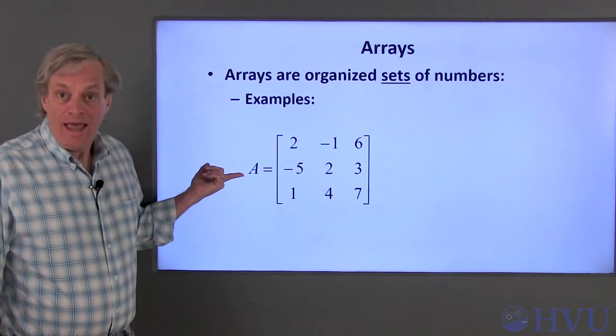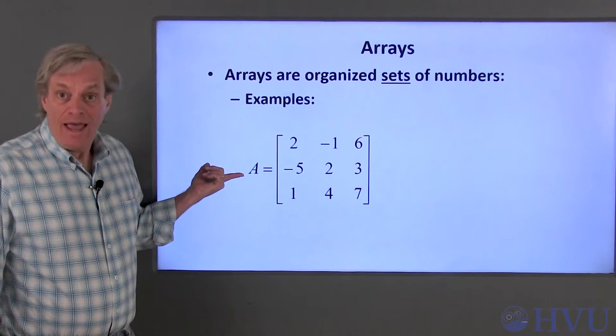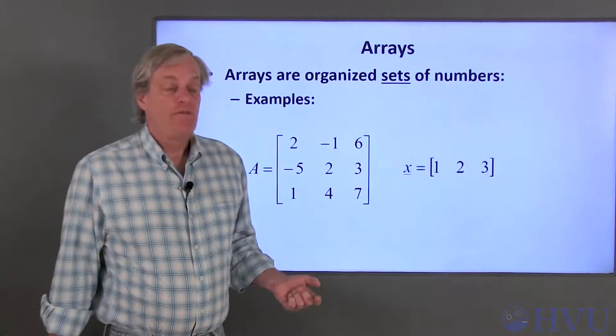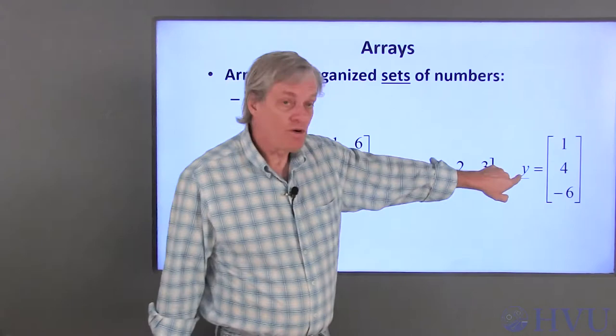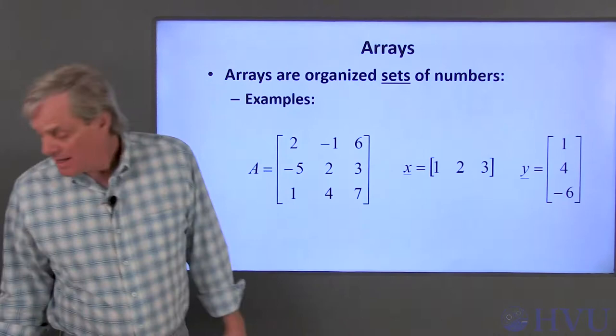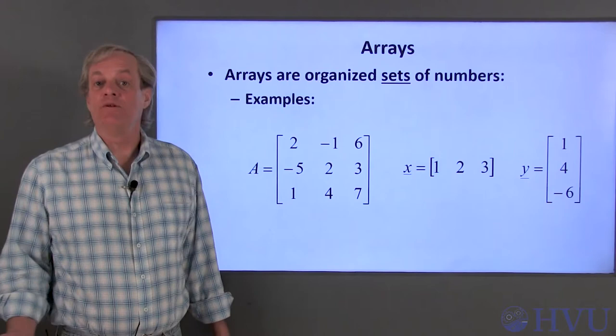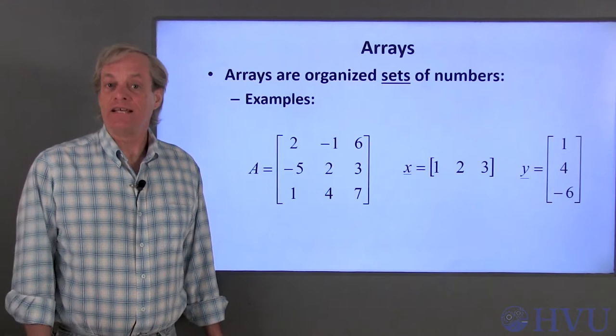For example, this array A contains 9 numbers organized in 3 rows and 3 columns. The array X has a single row containing 3 numbers. This array Y also contains 3 numbers organized in a single column. Individual numbers in the arrays are typically specified by the row and the column in which they can be found. Mathematically, the row and column numbers are indicated as subscripts separated by commas following the variable name.